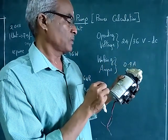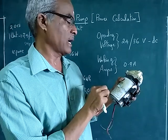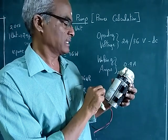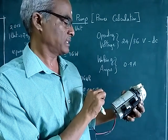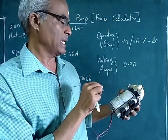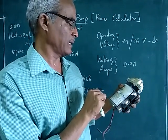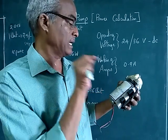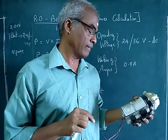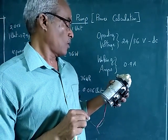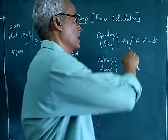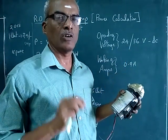What are the important details we have from this? Nominal flow rate is 1.6 LPM, pump pressure 130 psi, maximum inlet pressure 60 psi, operating voltage 24 or 36 volts DC. It is not AC, it is DC—24 volts or 36 volts.